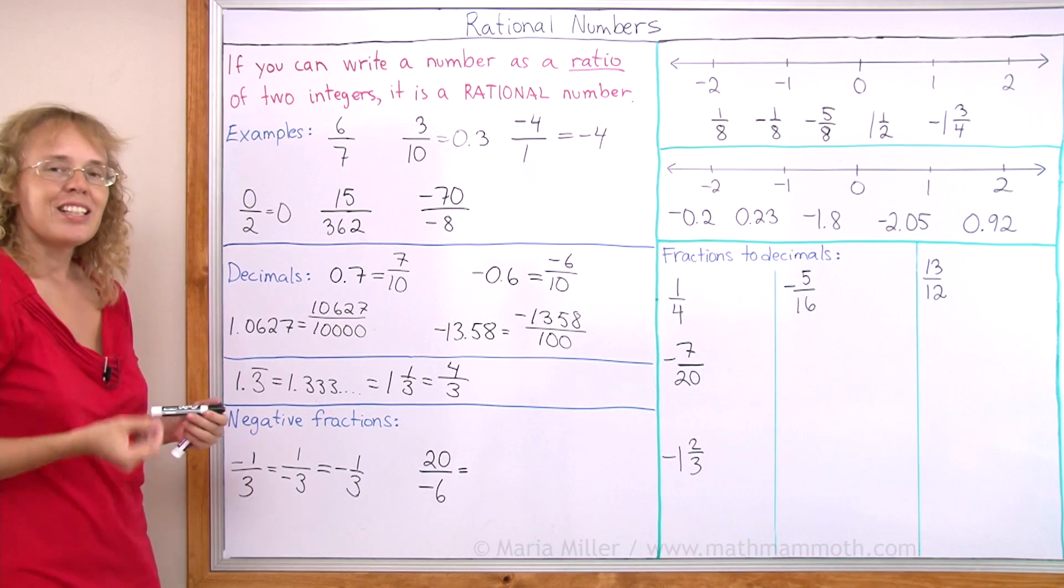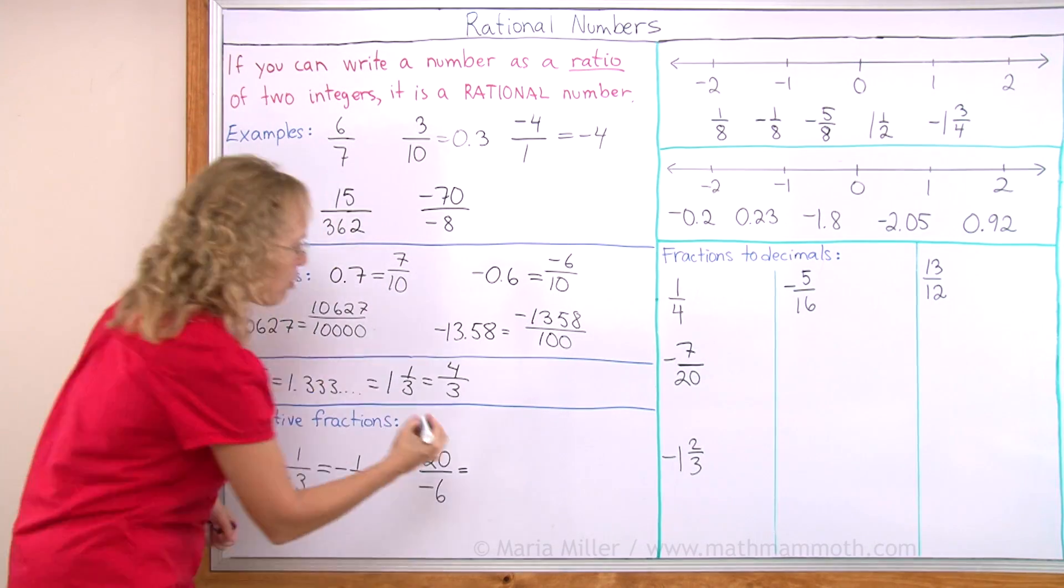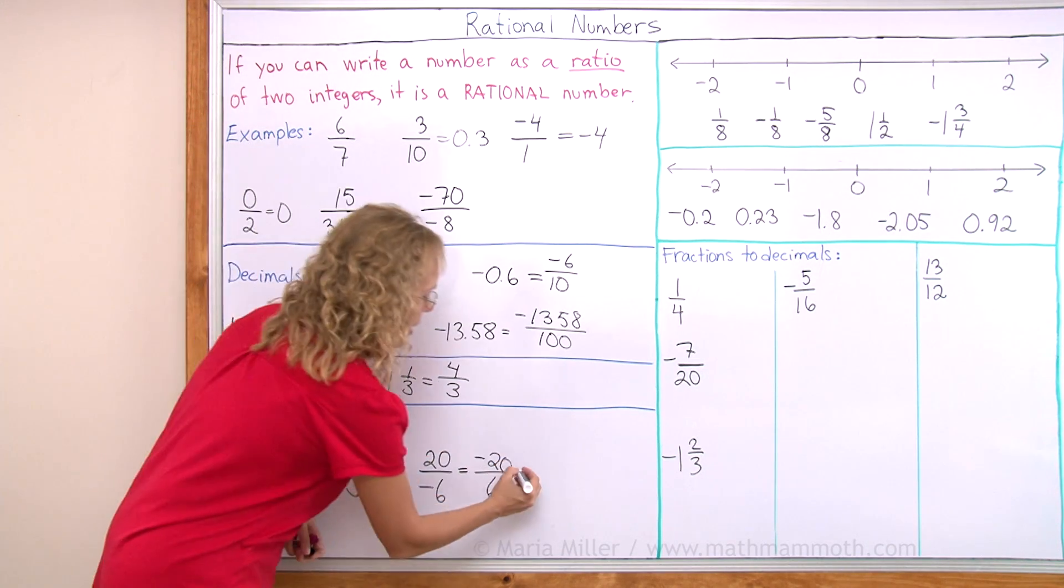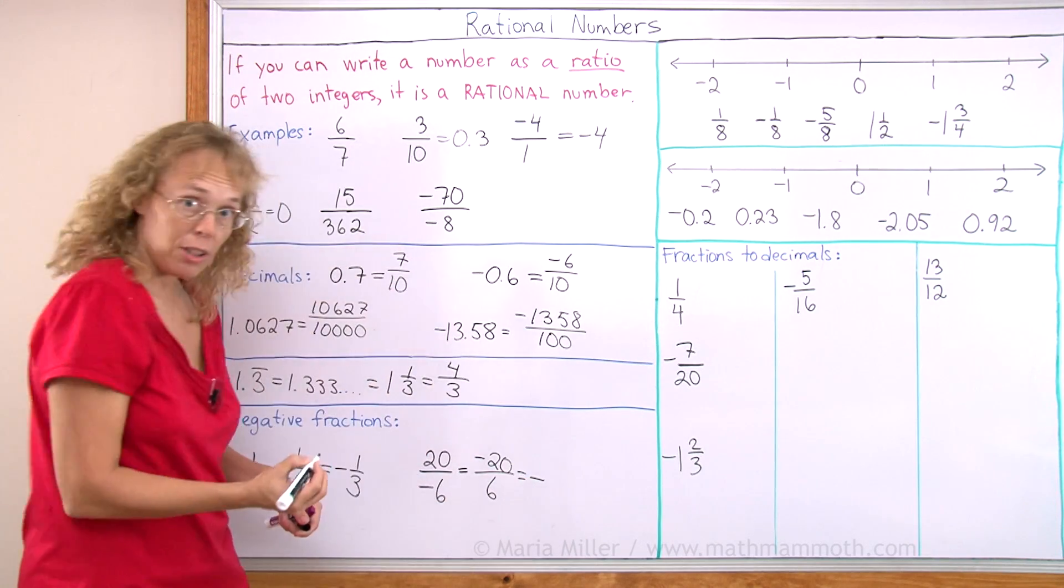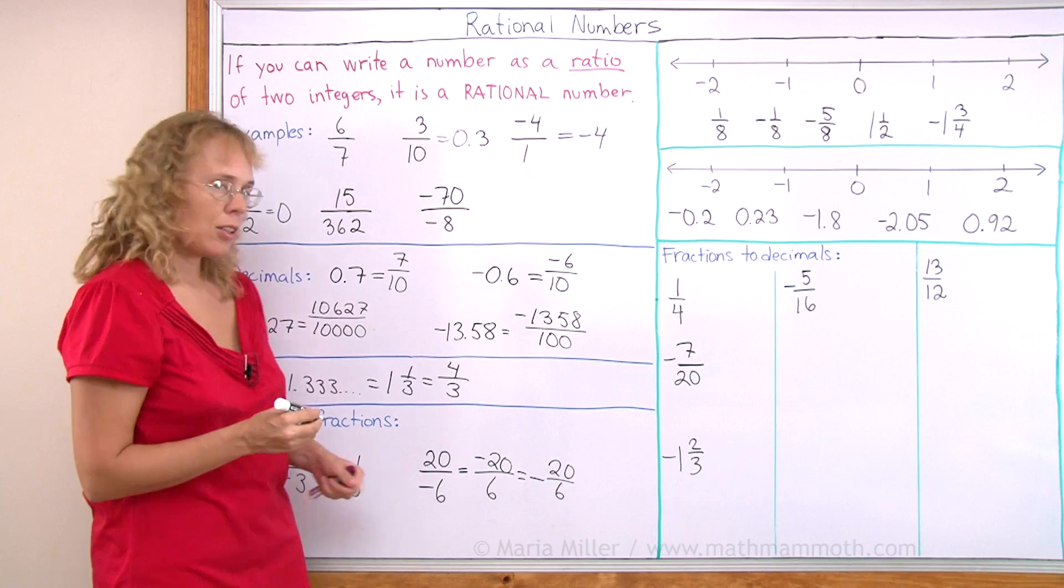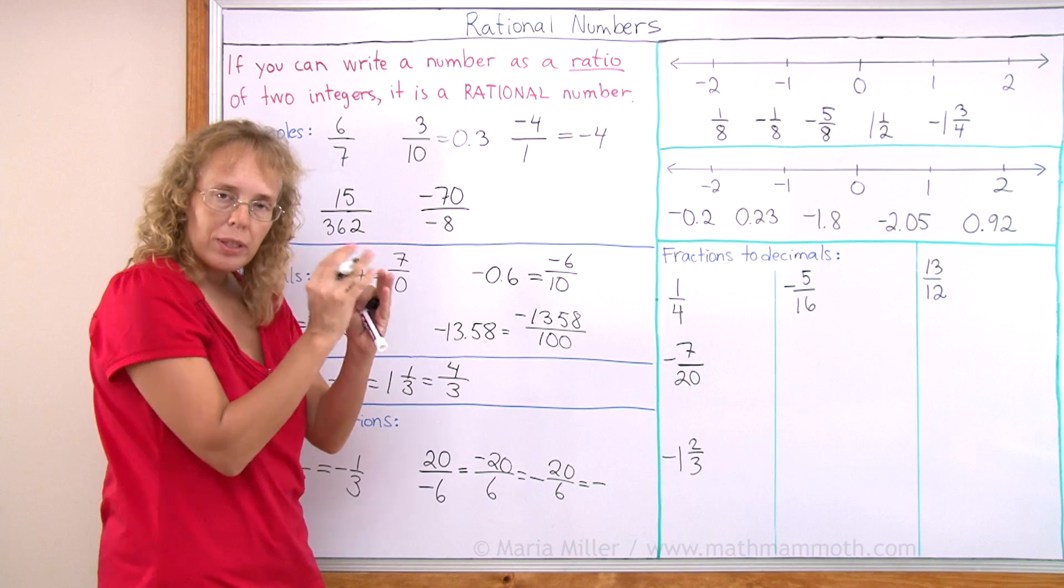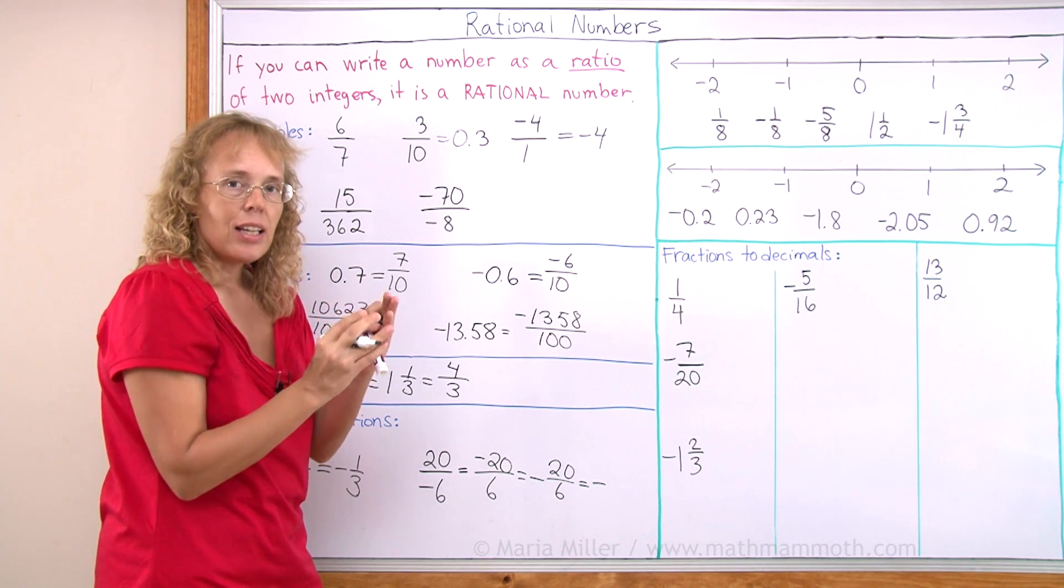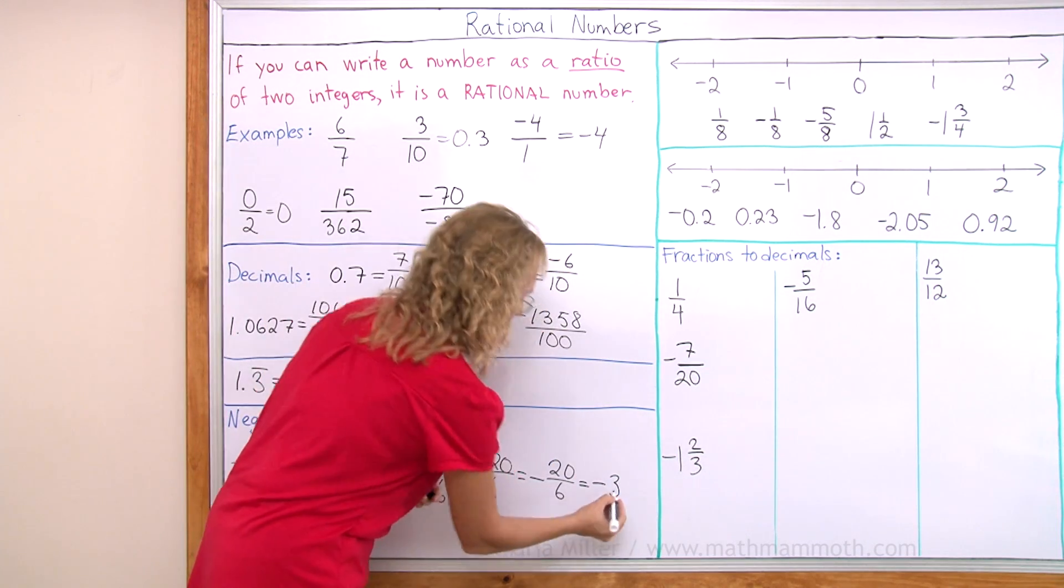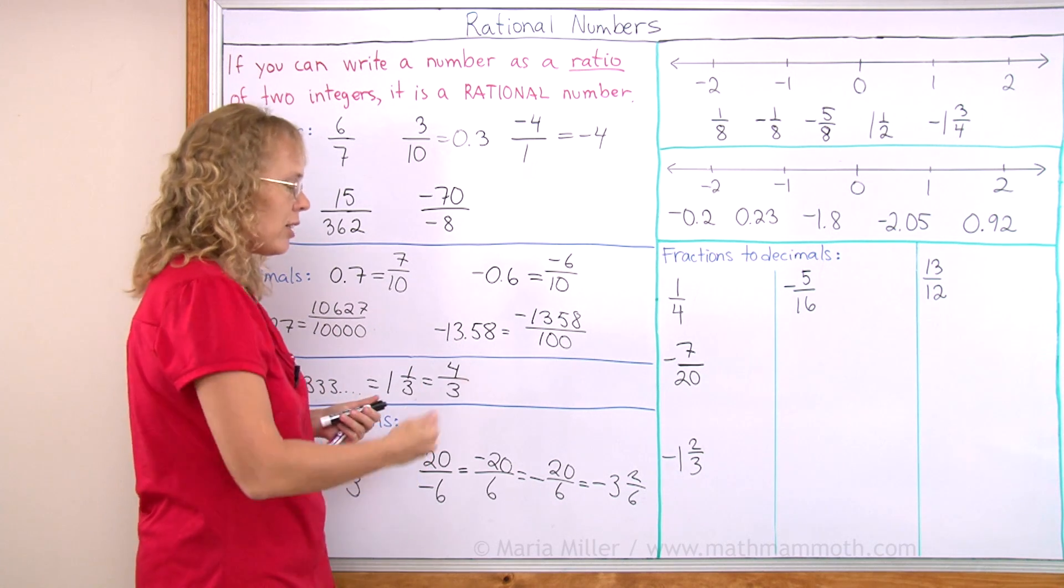Now, this here, equally so, it is the same as negative 20 divided by 6. But we usually write the negative sign here in front and then write negative 20 over 6. So that is now a negative fraction. Or you could write it as a negative mixed number. Just think of the 20 sixths as a mixed number and then put the negative in front. 20 sixths would be 3 and then it leaves 2 sixths. So negative 3 and 2 sixths.